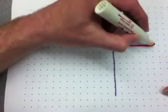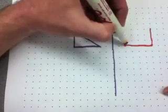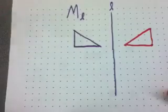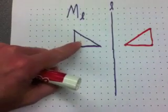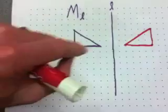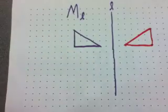And that's a distance 3 up. 1, 2, 3. So that red triangle is the reflection of the purple triangle across the line L. That's a reflection.